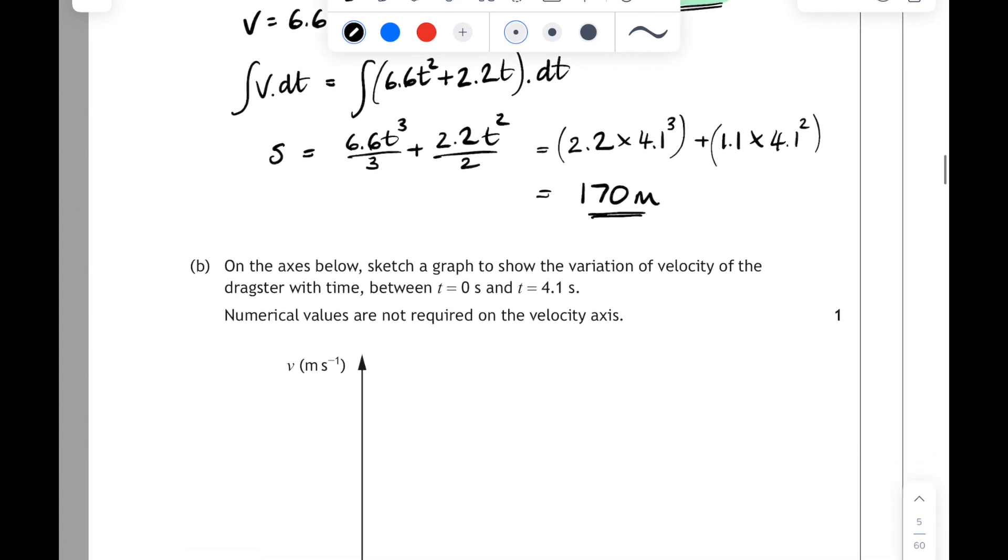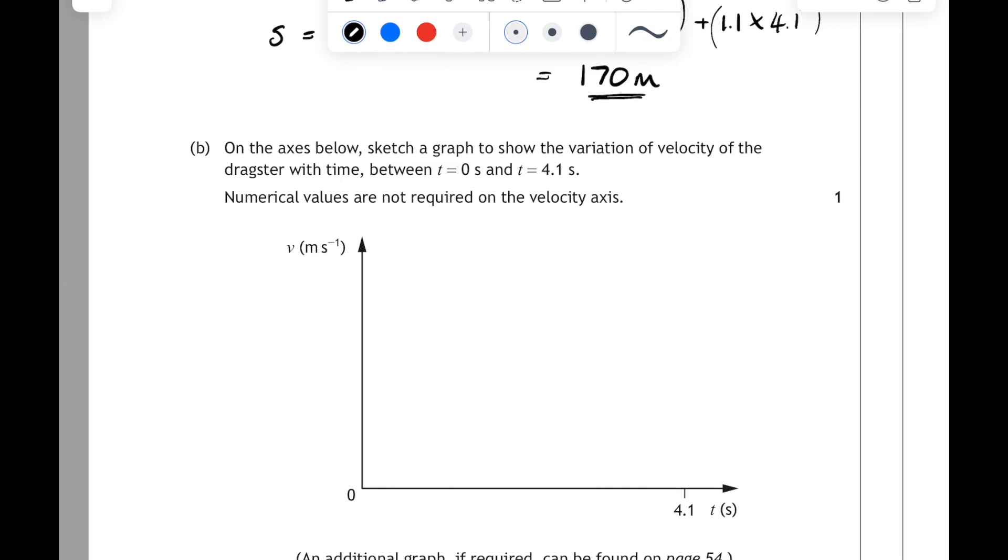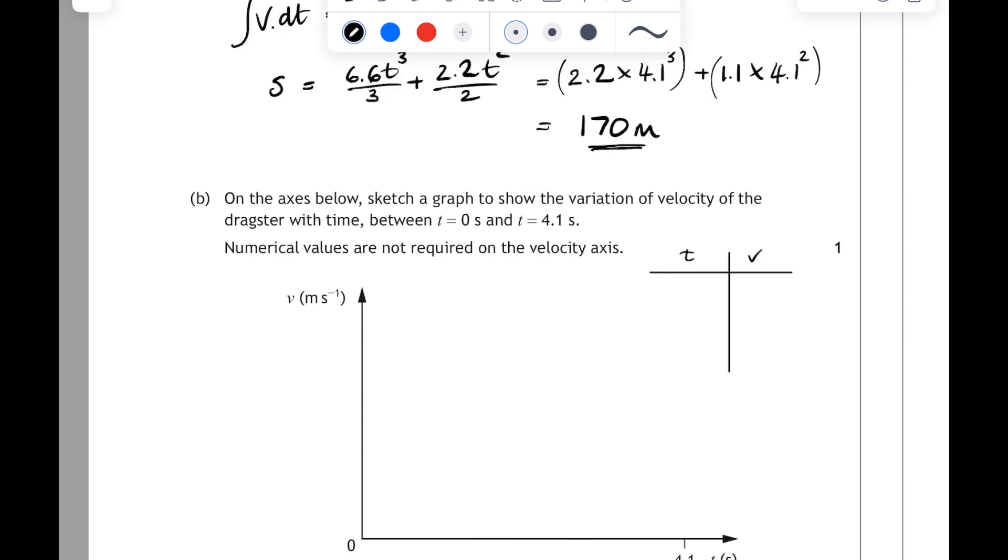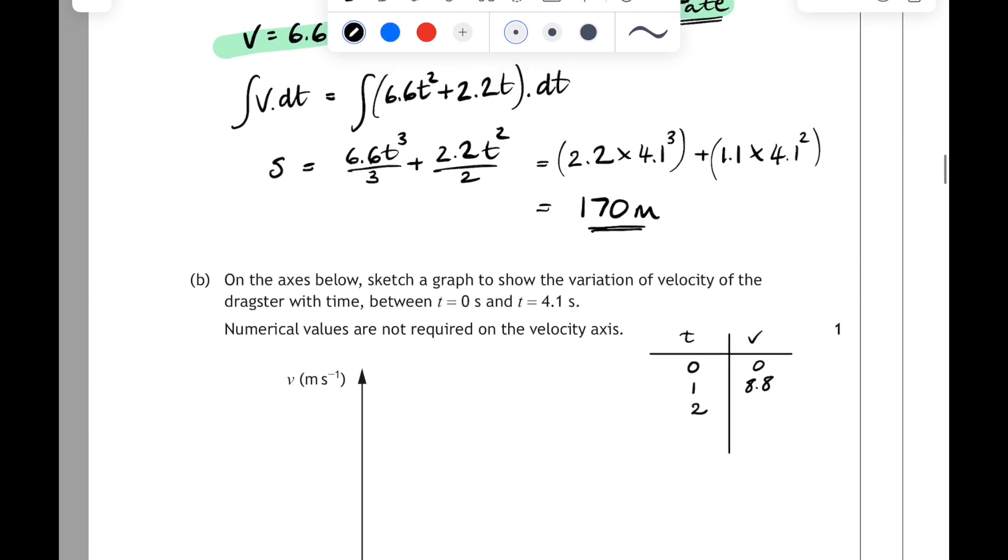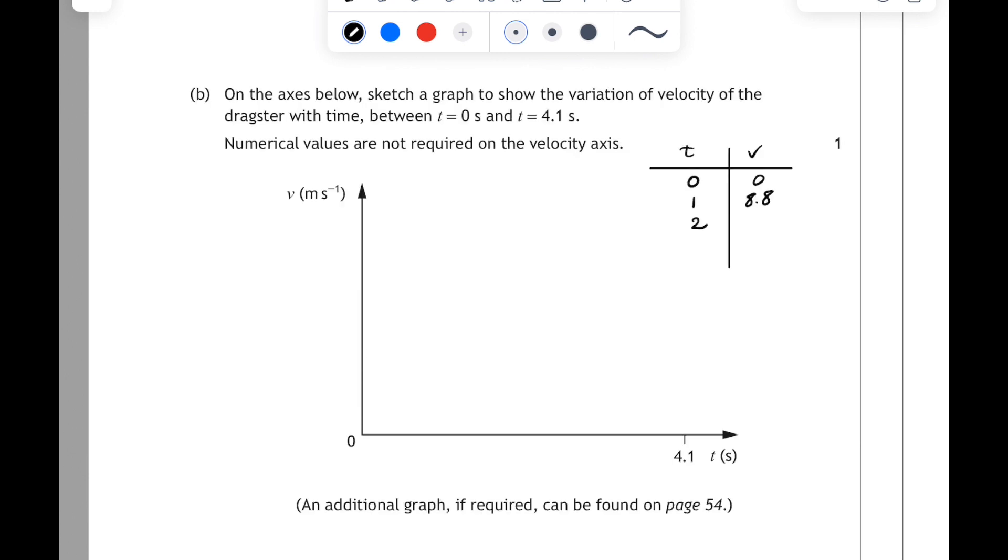Okay then, so one part b. This is a bit unusual here. On the axis below, sketch the graph to show the variation of velocity of the dragster with time between t equals 0 and t equals 4.1 seconds, and numerical values are not required on the velocity axis. This is only worth one mark, but one way of doing this is to sub in for different values of t and see what you get for v. So when t is 0, v will be 0. When t is 1, v will be 8.8. When t is 2, if you plug 2 into that relationship, you'll find out that the velocity is equal to 30.8. And if we do 4.1 and you sub that in, then your velocity is 148 meters per second.